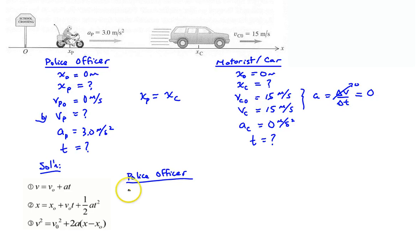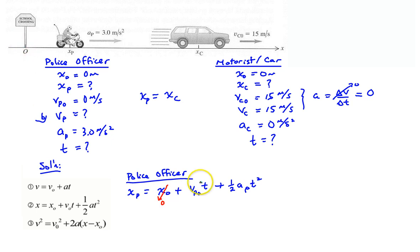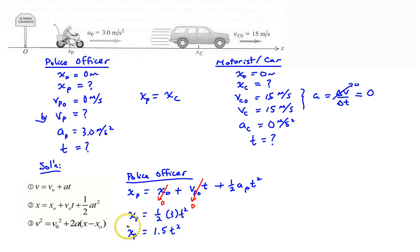Writing equation two for the police officer: the final position equals the initial position plus the initial velocity times T plus one-half times the acceleration times T squared. The initial position is zero and the police officer starts from rest, so those terms drop out. Substituting the acceleration of three meters per second squared, we get x sub p equals one-half times three times T squared, which simplifies to 1.5 T squared. We have two unknowns — position and time — so we need a second equation.